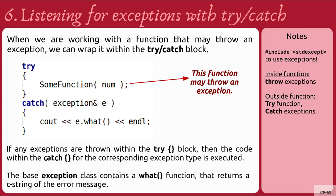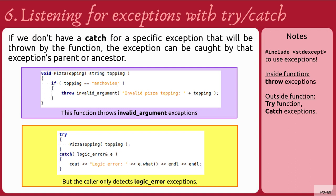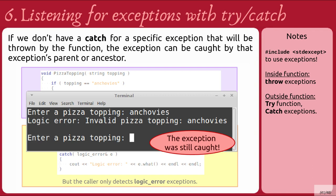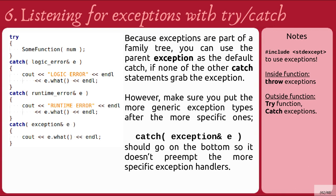The base exception class contains a 'what' function that returns a C-string of the error message. If we don't have a catch for a specific exception, it can be caught by that exception's parent or ancestor. For example, if a function throws an invalid argument exception but the caller is only listening for logic errors, since invalid argument is a type of logic error, it will still be caught and handled. Because exceptions are part of a family tree, you can use a parent exception as a default catch. However, make sure you put the more generic exception types after the more specific ones, so a general exception catch at the bottom doesn't preempt the more specific exception handlers.